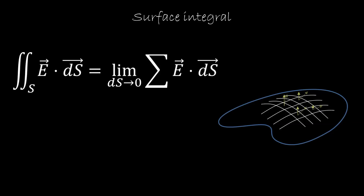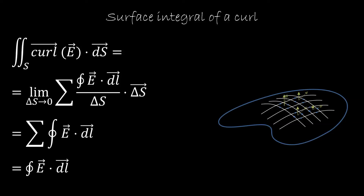The curl is also a vector field, so we ask: what is the surface integral of a curl? We take the surface, chop it into pieces, and from each piece take the component of the curl normal to the surface. That component is the closed line integral around that point divided by the surface area, and when we multiply by the area in the surface integral, those factors cancel. So we are summing all the line integrals for each piece. Each interior side is traversed once with a positive sign and once with a negative sign, so all internal sides cancel. Only the sides on the boundary contribute, giving us the result that the surface integral of a curl is just the line integral of the original vector field along the boundary.